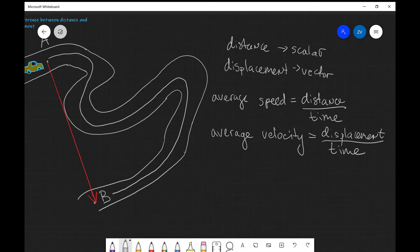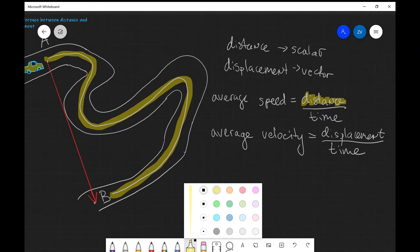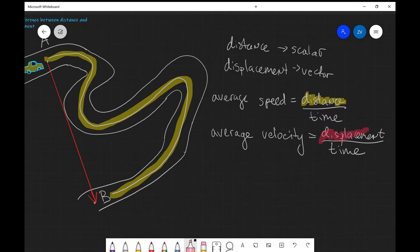So in the first case for the average speed we're going to be using the distance traveled. And the distance traveled is really this path taken along from A to B. For the average velocity we're going to be using the displacement which is this red vector between A and B. So this over here is our displacement.